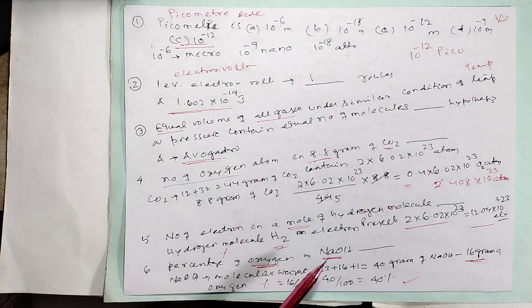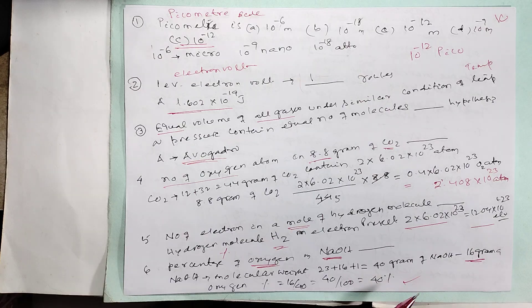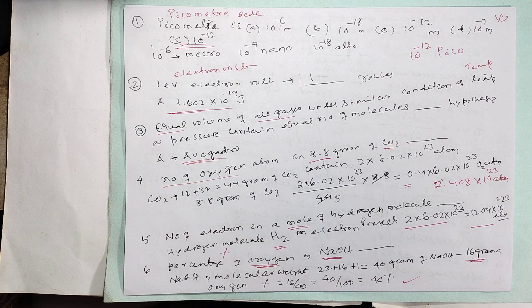Percent oxygen in sodium hydroxide: Sodium is 23, oxygen is 16, hydrogen is 1, totaling 40 grams. Oxygen is 16 by 40, which equals 40 percent.